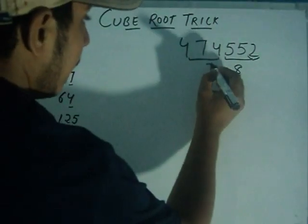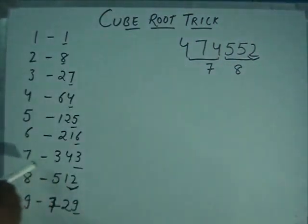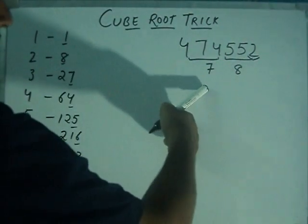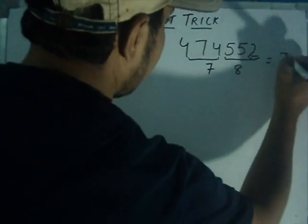That's why we take 343. So we get 7 here. 343 is the cube of 7. So we write here 7. So the answer is 78.